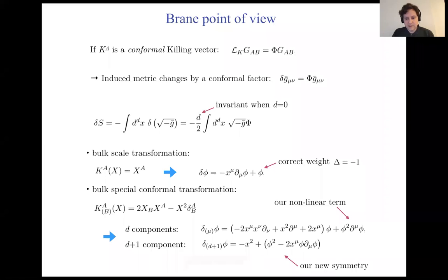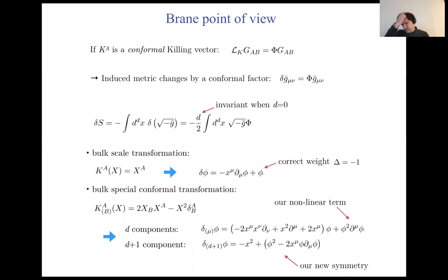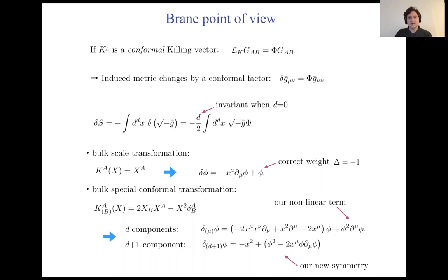This entire group of symmetries is nothing but the conformal symmetries of the bulk in which the brane is embedded, which shows the symmetry will continue to be present for other bulk metrics like AdS. So the curved-space DBI theories will also have this enhanced symmetry in zero dimensions.